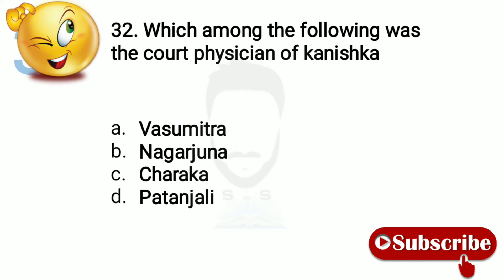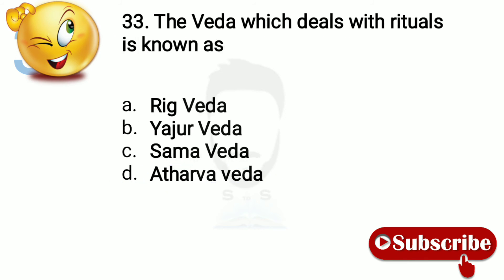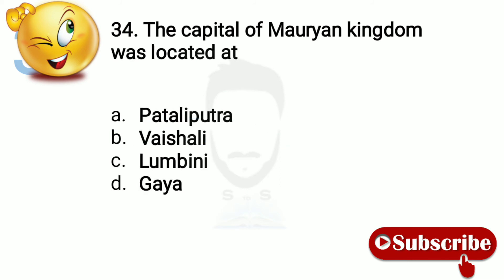Question 31: Which among the following was the court physician of Kanishka? Option number C, Charaka. Question 32: The Veda which deals with rituals is known as Yajur Veda. Question 33: The capital of the Mauryan Kingdom was located at — option number C, Lumbini.